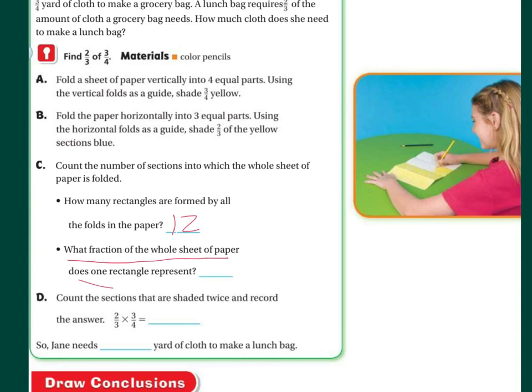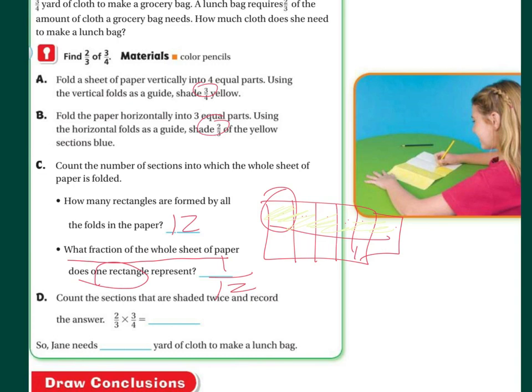Now, what fraction of the whole sheet of paper does one rectangle represent? Well, if you've got a piece of paper and you've got the 12 folds, which is what you should have had. One of them would be one twelfths. Now, count the sections that are shaded twice and record the answer. If you folded them into four equal parts and then you had to shade three yellow, and then you folded them into three equal parts and you colored two yellow, the answer should have been six of the twelfths, or one-half would have been shaded double. So, the answer is one-half yard of cloth to make a lunch bag.